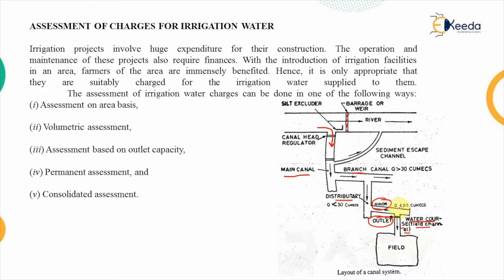This huge expenditure required for construction, operation, and maintenance of these projects requires finances. With the introduction of insured water supplies, the farmers are immensely benefited. Therefore it is only appropriate that they are suitably charged for the water supplied to them. This fixation of charge to the farmers by the government is known as the assessment of the irrigation water.